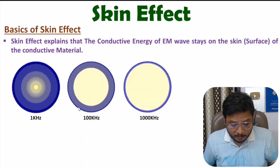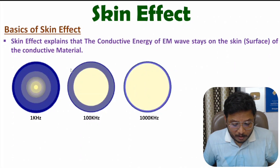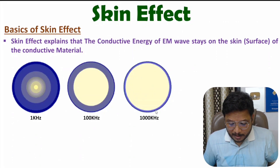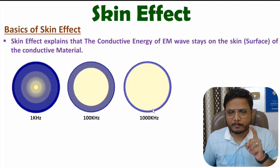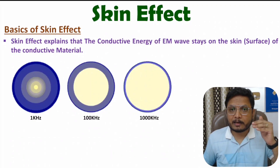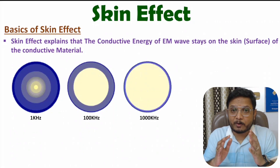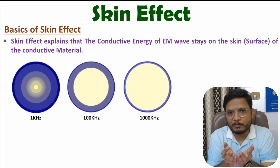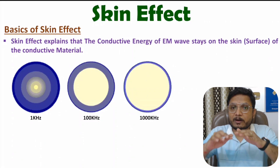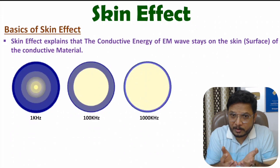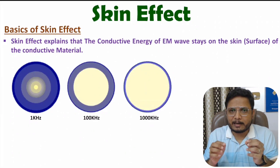But as you increase the frequency to 100 kilohertz, you can observe more energy staying on the skin. And if you further increase the frequency, you will observe even higher energy staying on the surface of this conductive material. So from this diagram, one thing is very clear: as you increase the frequency, more energy of the EM wave stays on the surface of the conductive material. That is what skin effect explains.